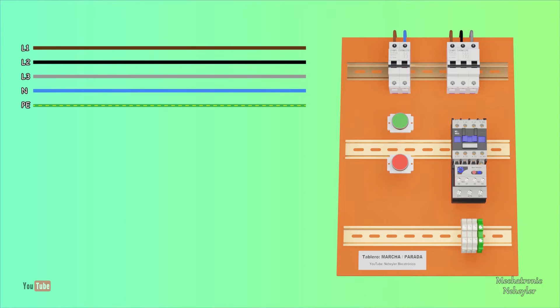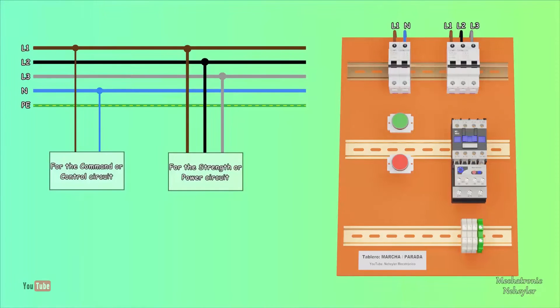Three-phase power conductors or cables are designated as line 1, line 2, and line 3, in addition to neutral and ground. From where, for the command or control circuit, it must be connected from a line in the neutral.